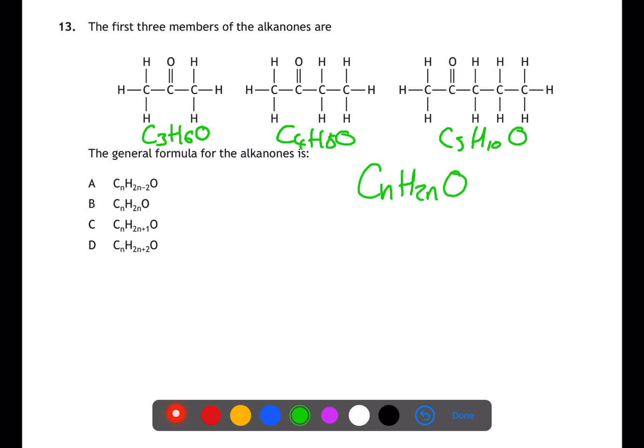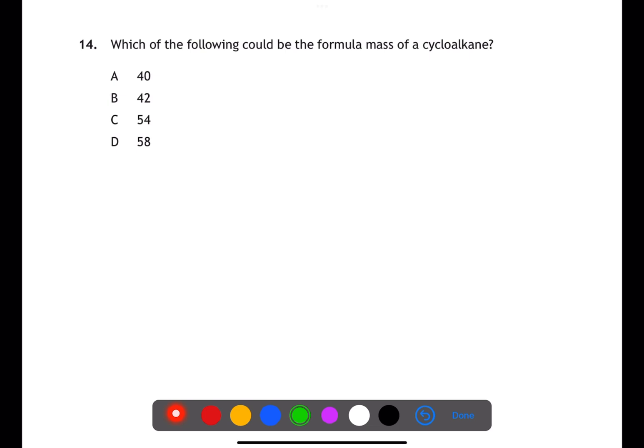Question 14 is a problem-solving question. We've been given a cycloalkane. Cycloalkanes have the general formula CnH2n. They need a minimum of three carbons to form a ring, so let's start with the first cycloalkane, C3H6, and calculate the gram formula mass. This happens to be 42, which is B.